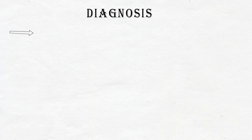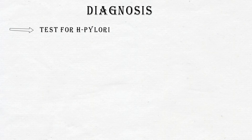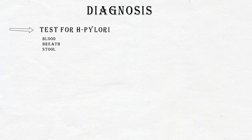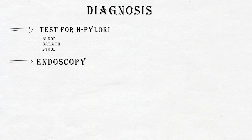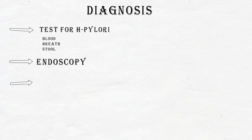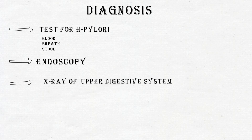Next is diagnosis. The main diagnosis is the test for H. pylori, done by blood, breath, and stool. In the breath test, bicarbonate food is taken by the patient, which is observed as CO2 as the H. pylori breaks the bicarbonate. Next is endoscopy, and third is X-ray of the upper digestive system.